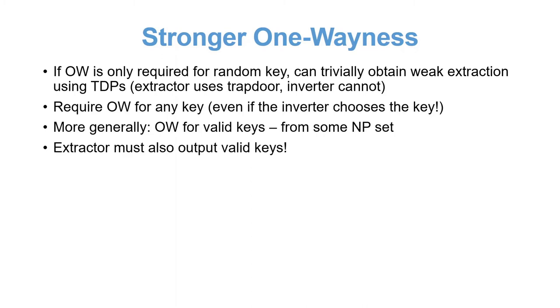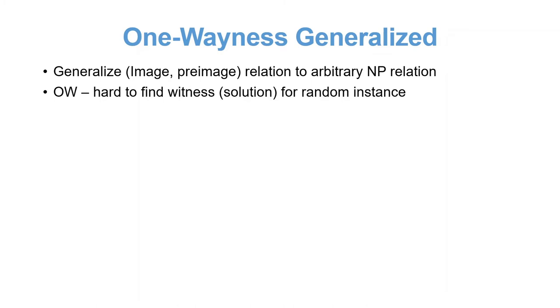With this treatment property, we can now proceed to our last adjustment. Following the generalization in BCPR, we also allow a more general form of hardness. We require that there is some hard NP relation rather than an image-pre-image relation. Now, it should be hard to find a witness to a random statement. The extractor is also required to find such a witness.